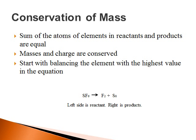For the Rules of Balancing Chemical Equations, the most important thing to remember is that the sum of the atoms of elements in reactants, the left side of the arrow, and products, the right side of the arrow, needs to be equal. Masses and charge from both sides of the equation needs to be conserved as well.